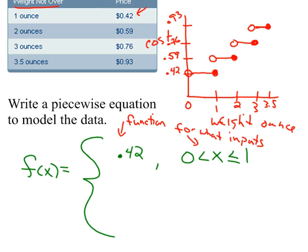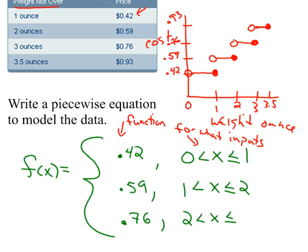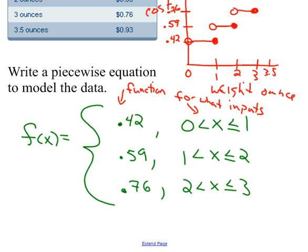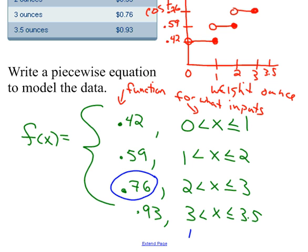The next piece is 59 cents, happening from one — not including one — all the way up to two. Similarly, 76 cents from two, not including two, up to three. And the final piece is 93 cents from three, not including three, to 3.5. So if x is exactly three ounces, I use the 76-cent piece, not the 93-cent piece.